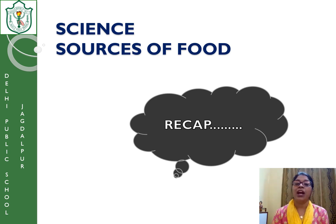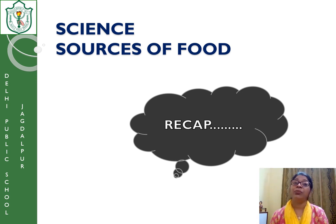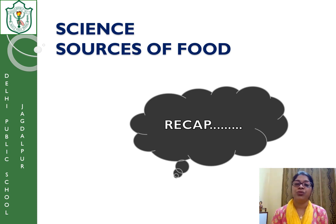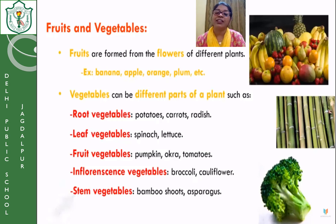Today we continue with what plants give us. Plants give us cereals, vegetables, fruits, different medicines, spices. The other source is animals — since they don't make food, they give products in the form of milk, honey, meat, and eggs. Today I will start with the second important thing plants give us: fruits and vegetables. Before this, we did cereals — cereals give us millets, wheat, and rice, from which we make different food items included in our diet.